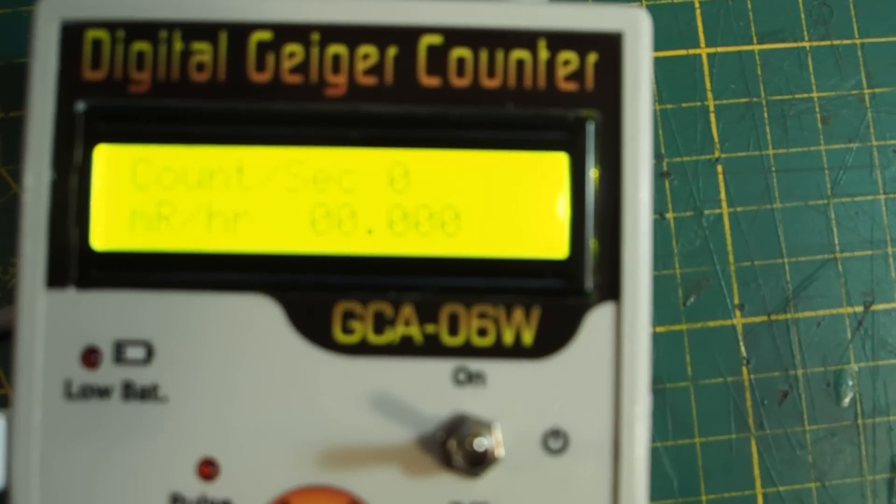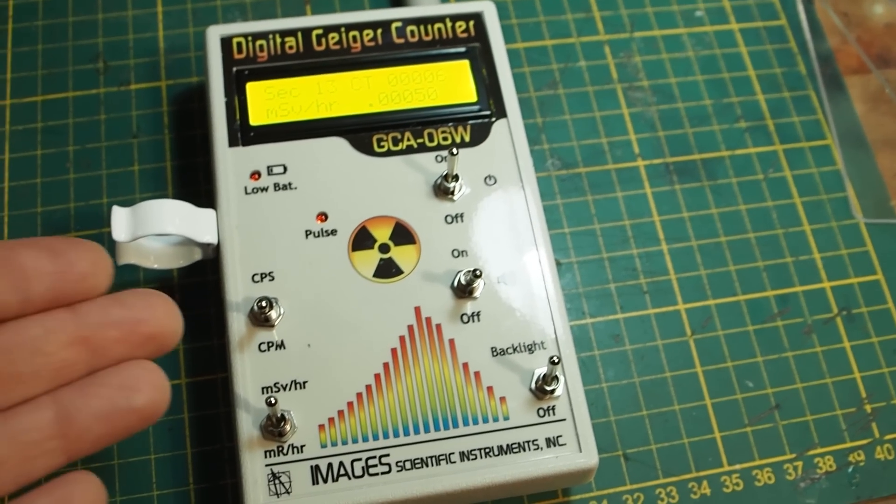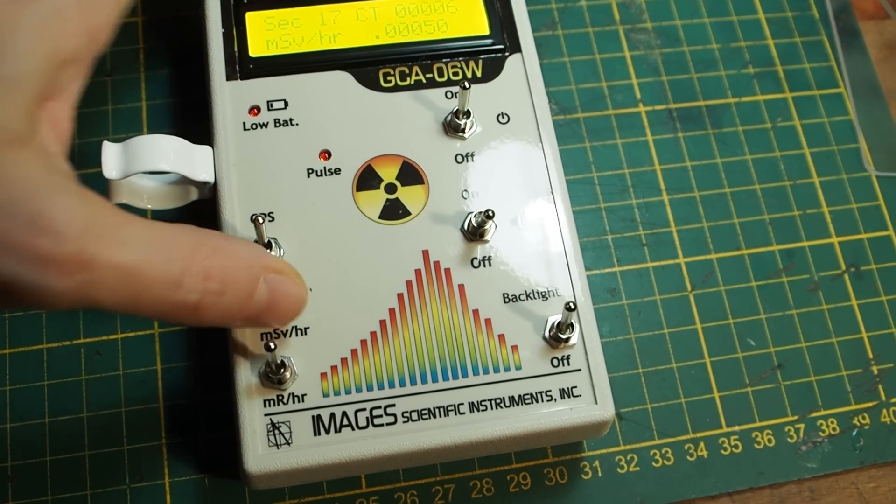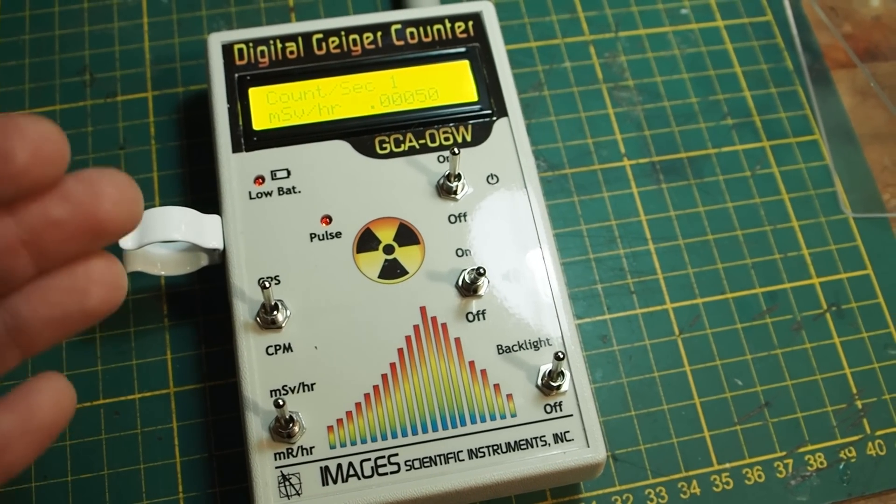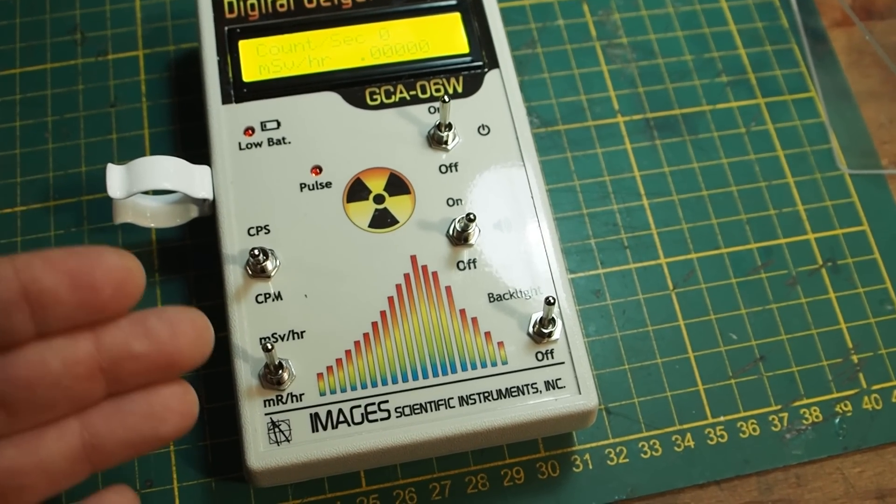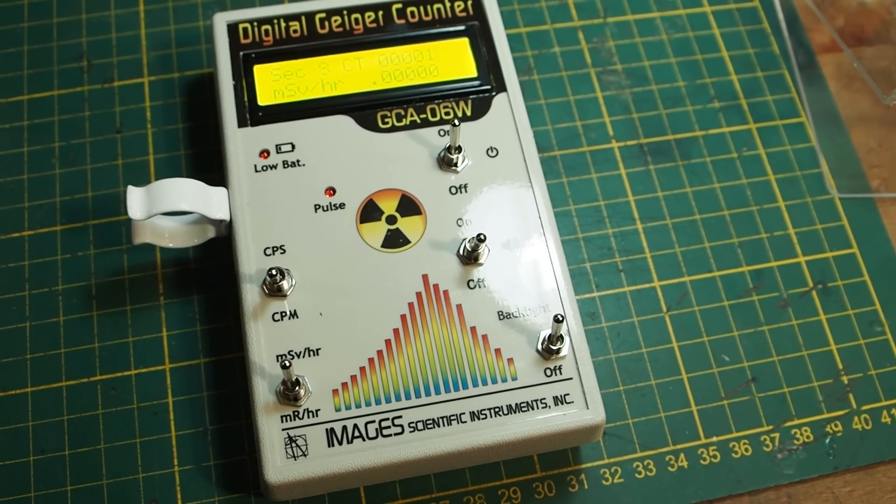So now you have millirad. Also this Geiger counter is really awesome because it lets you decide between CPS mode which is counts per second then the Geiger counter will count 10,000 counts per second or CPM mode which is counts per minute and this is a setting that you would use for background radiation.